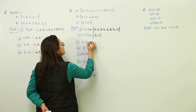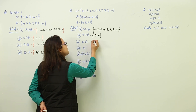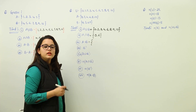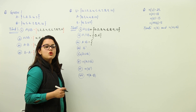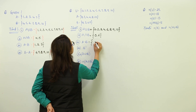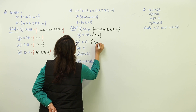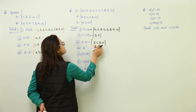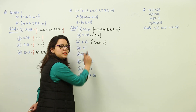Next is finding out the difference, that is A minus B. This set is going to contain the elements which are present only in A and not in B. Those elements are 2, 4, 8, and 10. These are the elements which are present in A but not in B.